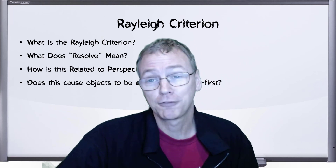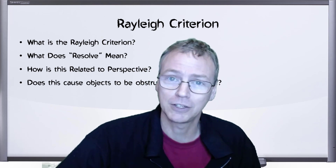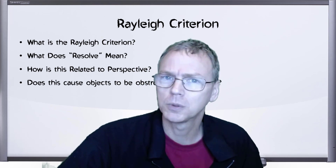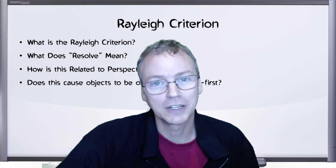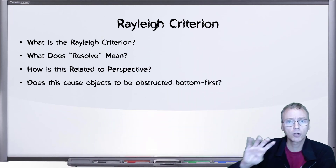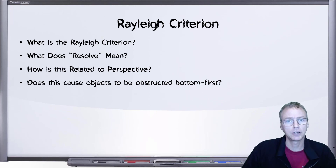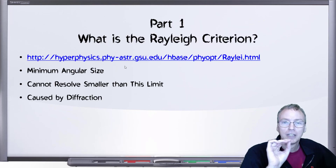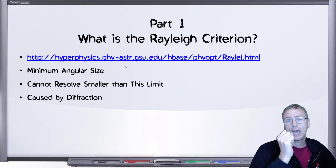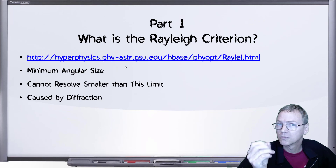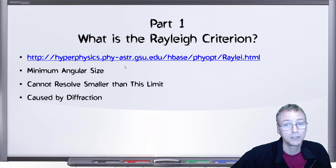But if you take an extreme contrarian view, such as that the Earth is flat, how would you explain something like that? Enter the Rayleigh criterion. I'm going to split this into four short videos looking at four different aspects of the Rayleigh criterion. The Rayleigh criterion describes a minimum angular size that we'll be able to resolve, and this is a phenomenon caused by diffraction.